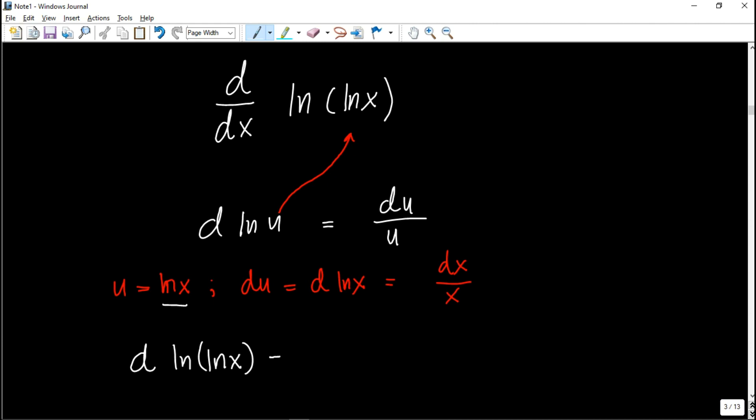Then you have dU. What is dU? DU is dx over x, divided by u, which is ln x. Therefore, we have dx all over x ln x.